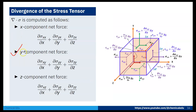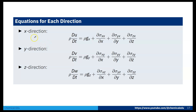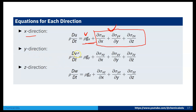Similarly, we compute y and z direction net forces per unit volume. The term ∇·σ combines the x, y, and z components of net force. Writing the momentum equation per direction: for x, ρ(Du/Dt) = ρgx + (∂σxx/∂x + ∂σyx/∂y + ∂σzx/∂z); for y, ρ(Dv/Dt) = ρgy + surface force; for z, ρ(Dw/Dt) = ρgz + surface force. Surface force includes both pressure and viscous normal and shear contributions.